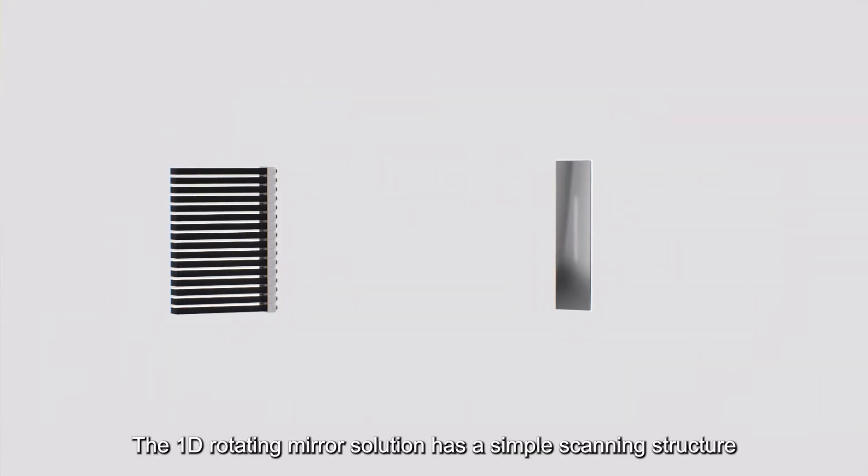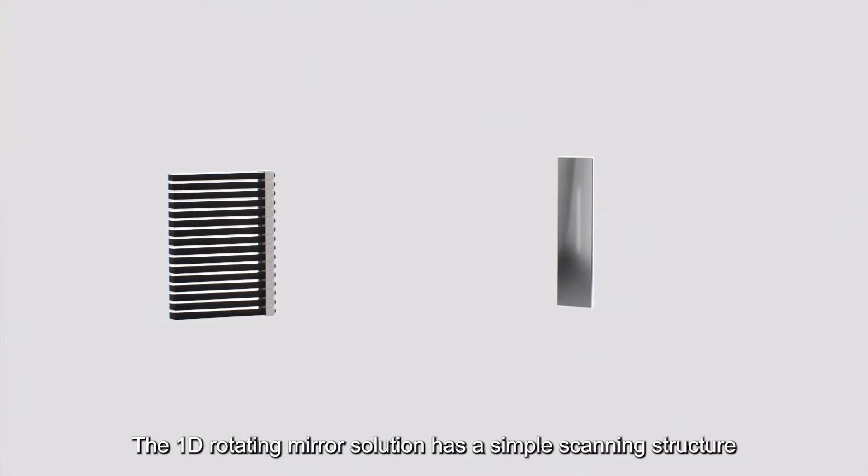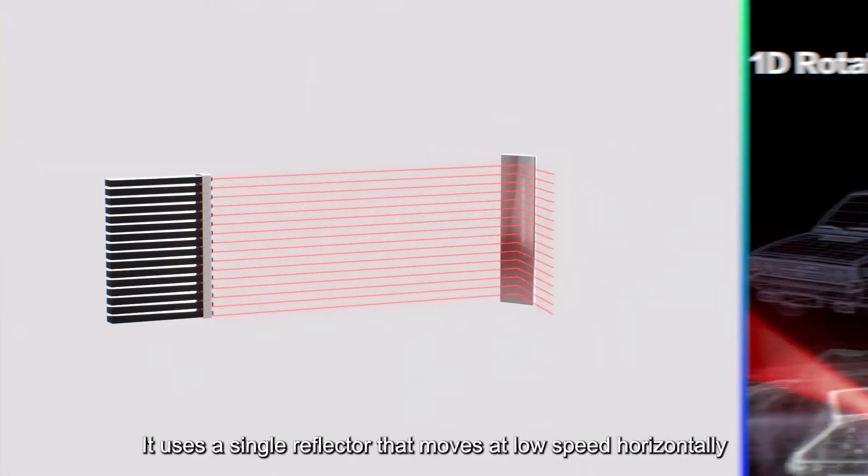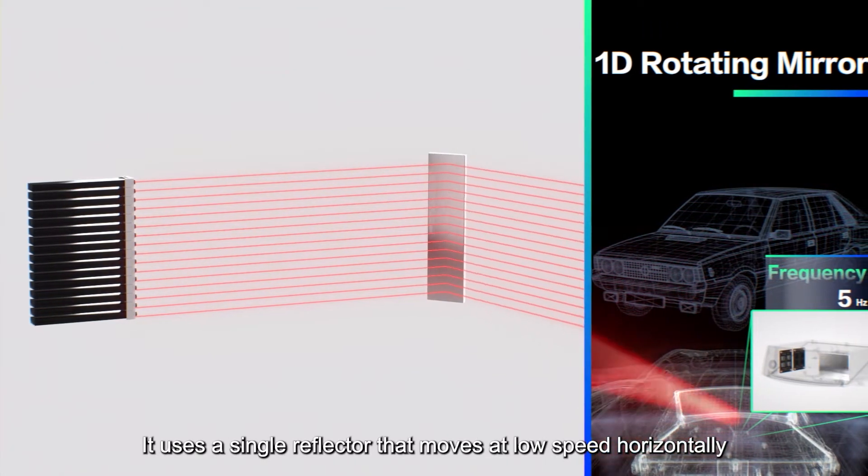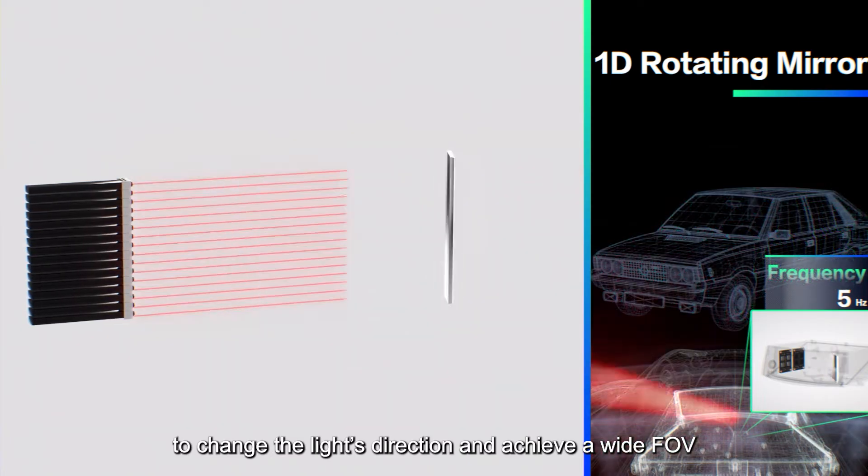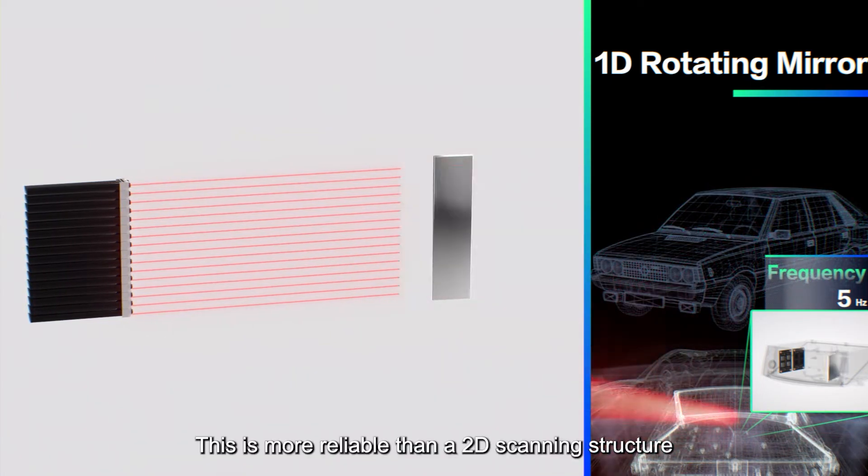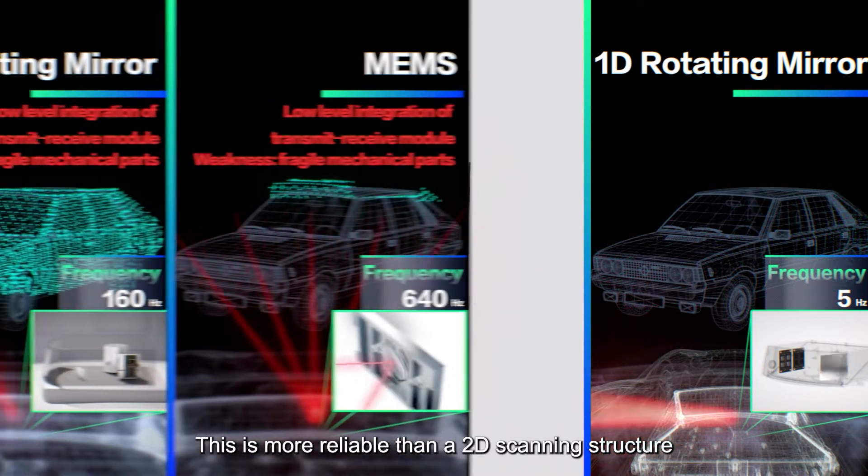The 1D rotating mirror solution has a simple scanning structure. It uses a single reflector that moves at low speed horizontally to change the light's direction and achieve a wide FOV. This is more reliable than a 2D scanning structure.